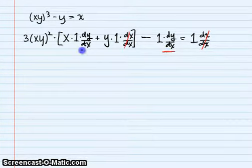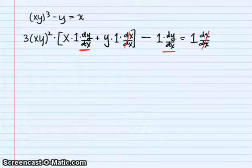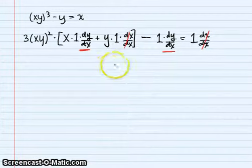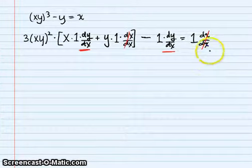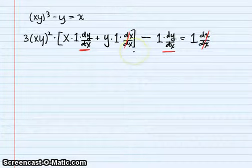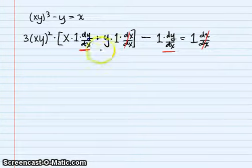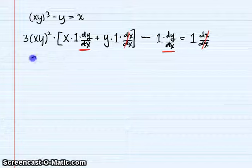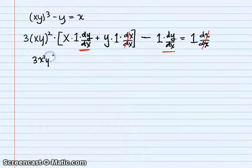Sometimes these are a little tricky, but the general idea is that you want to get everything that doesn't have dy/dx onto the other side, then factor out your dy/dx, and then divide by everything you factored out. So let's go through that step by step. We want to take everything without a dy/dx and put it on the right side of the equation.